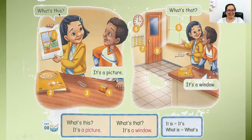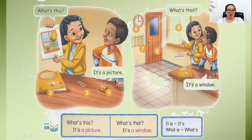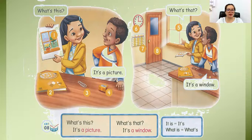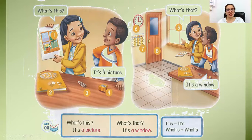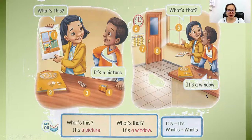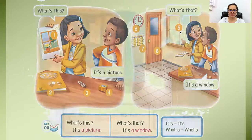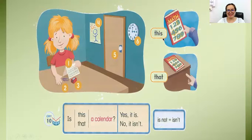What is this? It's a picture. Look at the girl — she is holding the picture, so that's why she used 'this.' What's that? She is pointing to the window, which is very far from her, so it's a window. Use 'this' if the item is very close or you are holding it, and use 'that' if the object is far and you are pointing at a distance.